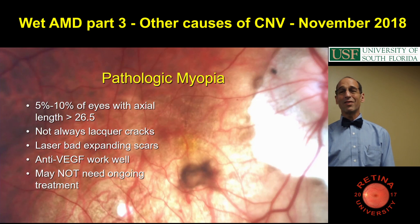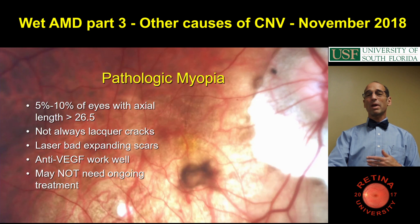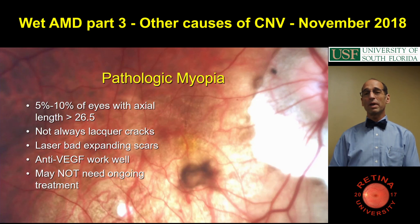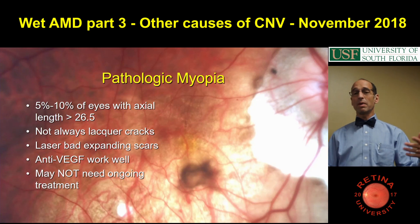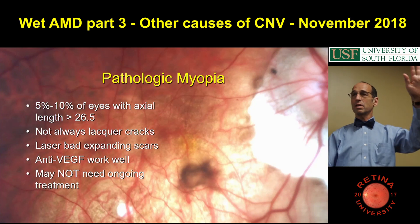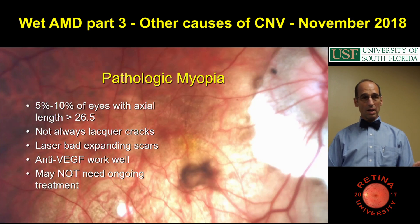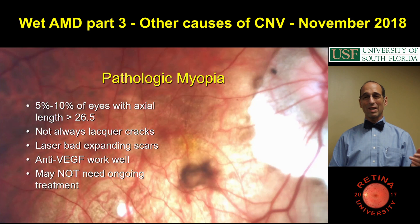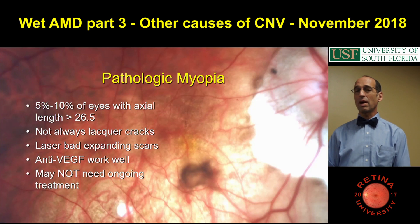Pathologic myopia gets CNV — 5% of eyes with an axial length over 26mm get pathologic myopia. It's not always at a lacquer crack. Laser again is bad, because these people's myopia would progress — you'd laser them, and then as their myopia progressed, they'd lose the central vision with the scar. Anti-VEGFs are good. There are some studies on pathologic myopia showing that you don't necessarily need ongoing treatment. You treat them for three to six months, and then they dry up.